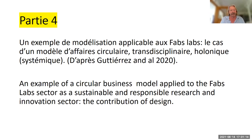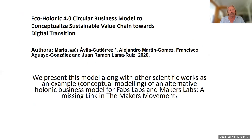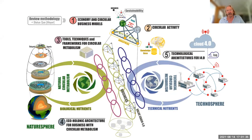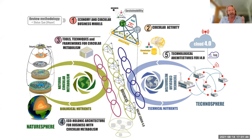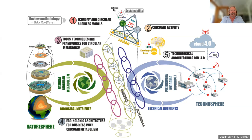Here are examples of a circular business model applied to the Fab Lab sector as a sustainable response. The paper is titled 'Echolonic 4.0: Circular business model to conceptualize sustainable value chain toward digital transitions.' Here is the model — complex, with many spheres. Their methodology was to review circular economy and circular business models. I have studied activity theory from Vygotsky, Leontiev, and Engeström for 20 years — I met Engeström in Helsinki three or four years ago.